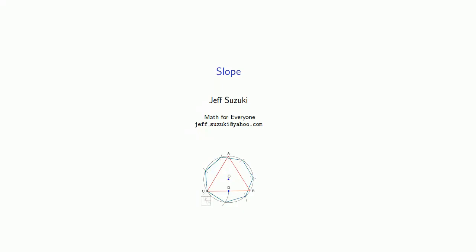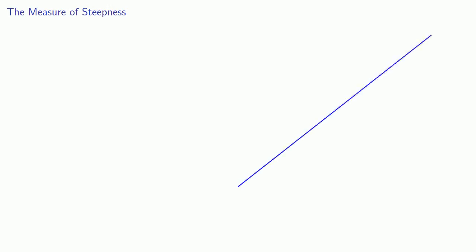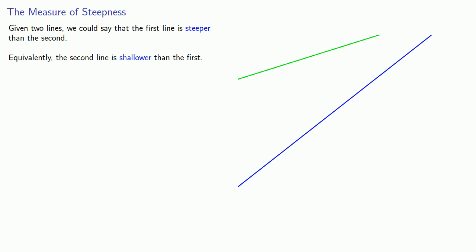An important property of straight lines is known as the slope. This comes from the following idea: given two lines, we could say that the first line is steeper than the second. Equivalently, we could say that the second line is shallower than the first. We'd like to be able to assign a numerical value to steepness. Here's a useful strategy we'll find many opportunities to use.